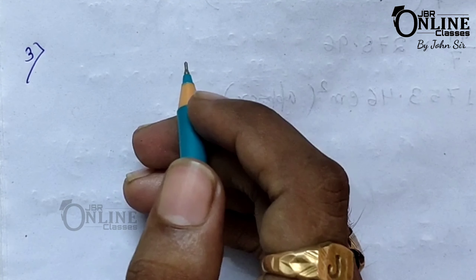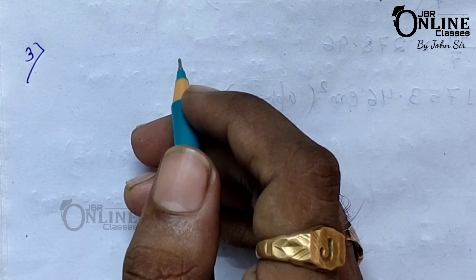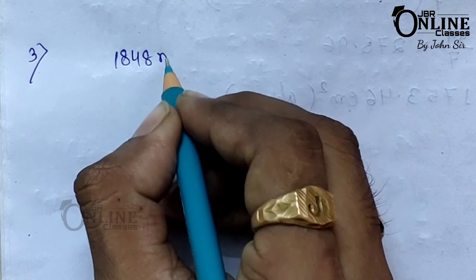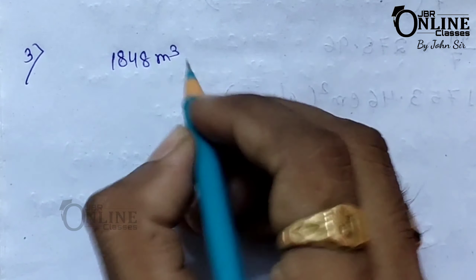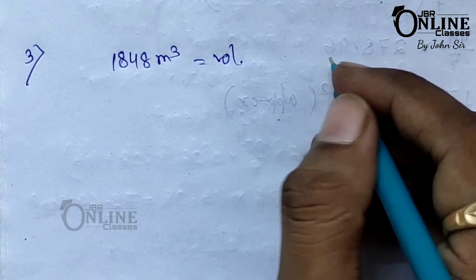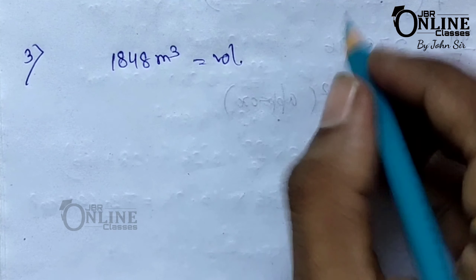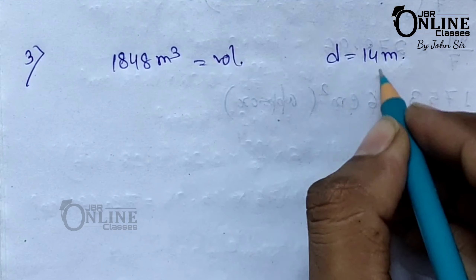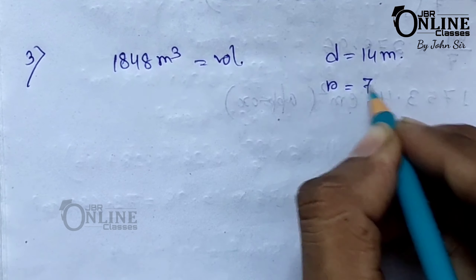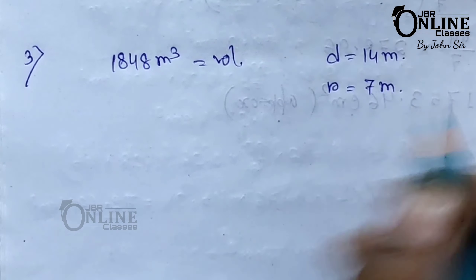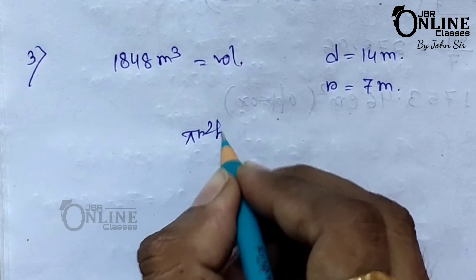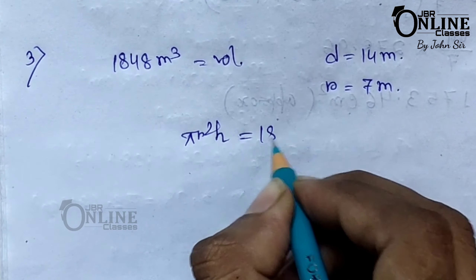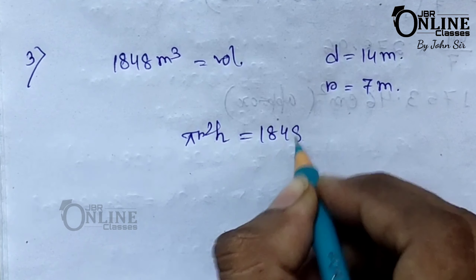Sum number three: the capacity of a cylindrical tank is 1848 meter cube — capacity means volume. The diameter equals 14 meters, so the radius equals 7 meters. According to the problem, pi r squared h equals 1848.